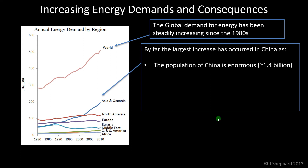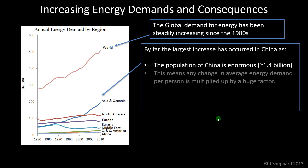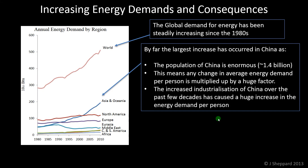It's worth thinking about the reasons for that. China has an enormous population of about 1.4 billion people, and that means that if there is a change in the average energy demand per person — so if lifestyle changes and each person starts using a little bit more — that extra use gets multiplied by a huge factor. And because China has been becoming increasingly industrialised, it used to be highly agricultural even only a few decades ago, and that's changed a lot.